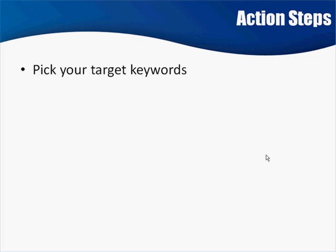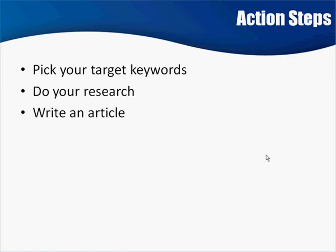Here are the action steps: pick your target keywords, go through your keyword list, find the ones that convert, and find ones you could potentially rank for — those with fewer than 30,000 results for exact phrases. Research the topic, read articles and free content online, write your own article, and submit it to easyarticles.com. Do the StumbleUpon rating, the MTurk views, and optionally autostumble.net for more traffic. This is quick, easy, powerful, and helps your SEO ranking. Next module: generating traffic through forums.